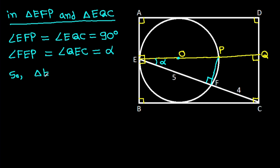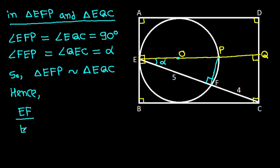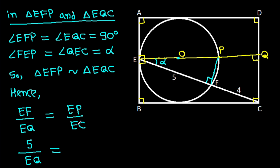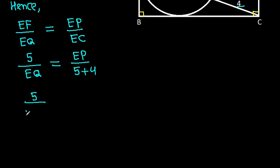So triangle EFP is similar to triangle EQC. Hence EF over EQ equals EP over EC. With EF equal to 5: 5 over EQ equals EP over EC, where EC is 5 minus 4, giving us 5 over EQ equals EP over 9.